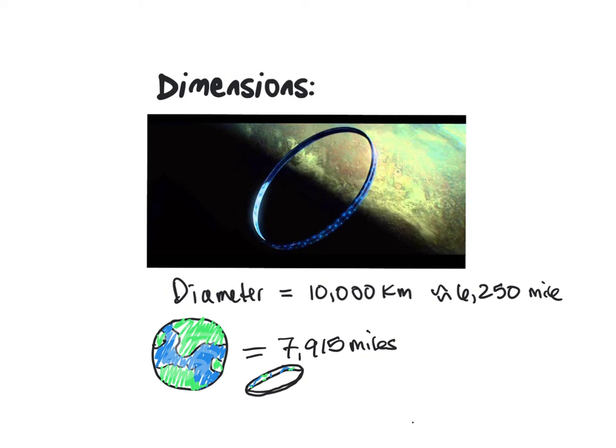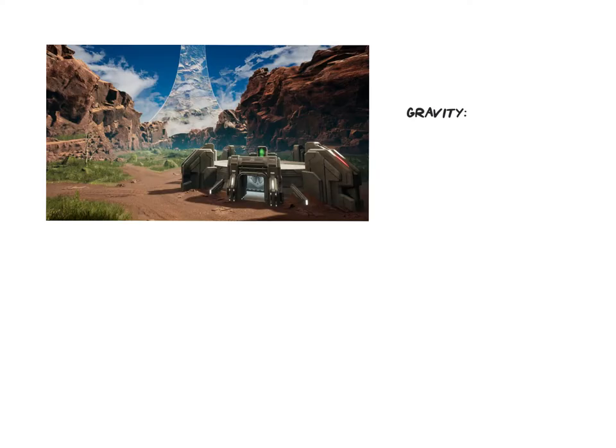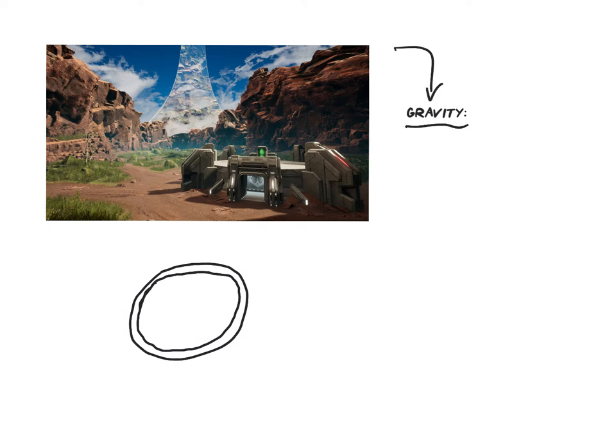If you've ever played Halo, you know there's some interesting things. When you're playing on Halo, as you can see here from the famous map Blood Gulch, you actually play on the outer edge of the ring, and you actually feel like you're on a planet. It has its own actual artificial gravity.